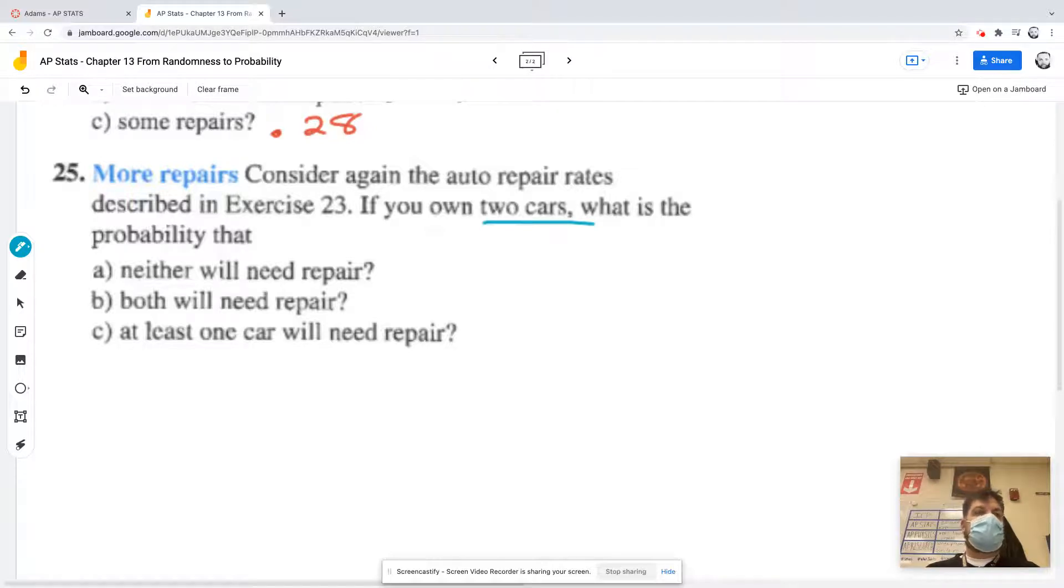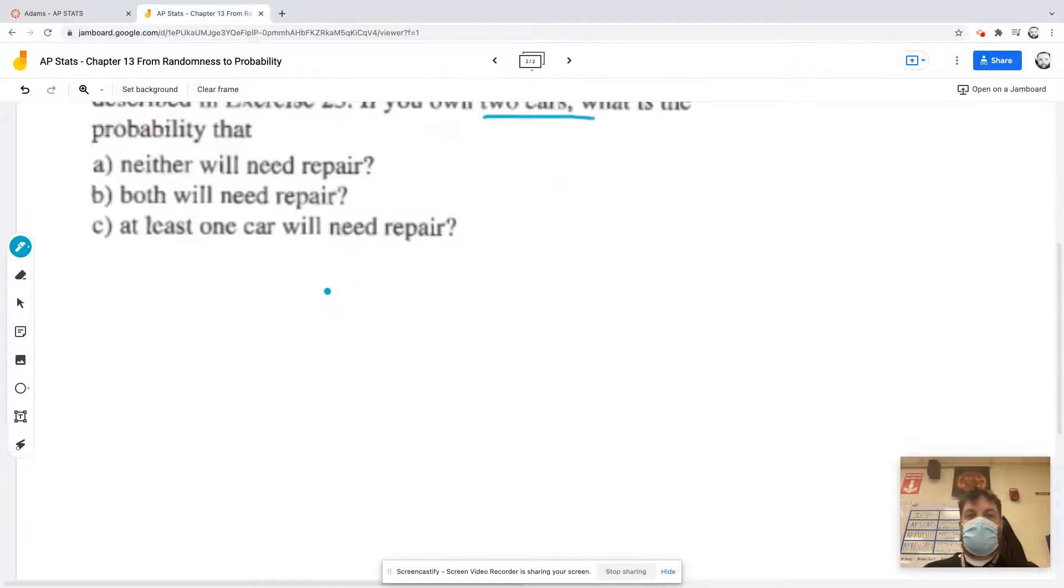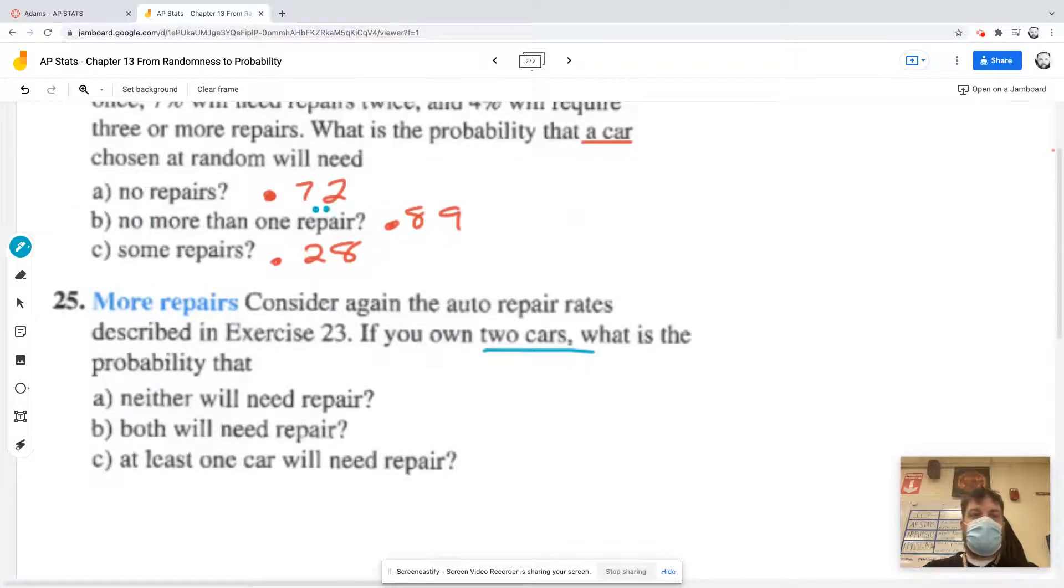Well, this is very similar to the last problem that we did. So what was the answer for 23? Well, for 23, no repairs was 0.72. But now we're doing that with two cars. So we're going to say 0.72 for the first car, that's the probability of that, and then 0.72 for the second car, and multiply those together. And it comes out to be about 0.5184. So about 54% chance.